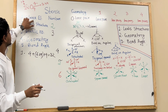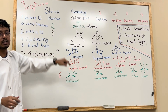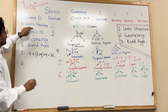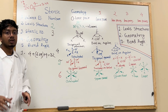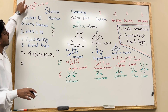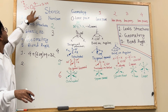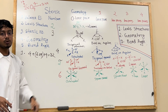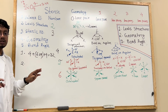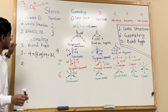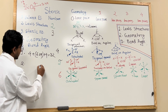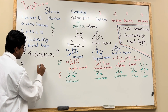Now that we have the valence electron count, we need to determine the Lewis structure. Before drawing it, you need to find out which atom has the least electronegativity. Silicon has an electronegativity of 1.9 and oxygen has 3.44. So we need to draw silicon in the middle — the atom with the least electronegativity goes in the center of the structure.